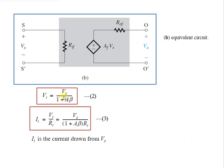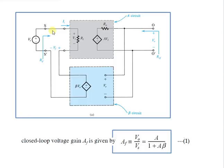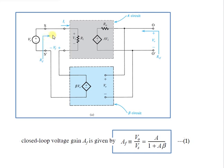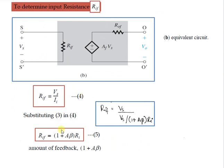Equation number 2 is substituted to obtain equation number 3. This current is drawn from the source voltage Vs, and the input resistance RIF = Vs / Ii, given as equation number 4. Substituting equation number 3 into equation number 4, RIF = Vs / [Vs / ((1 + A·beta) · Ri)], which gives RIF = (1 + A·beta) · Ri, denoted as equation number 5.